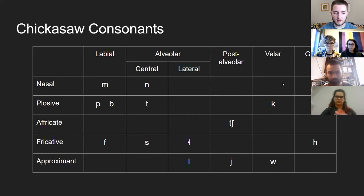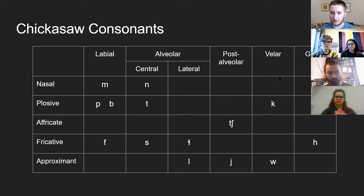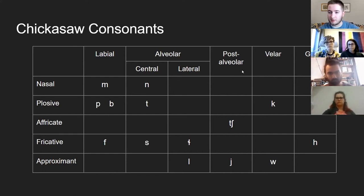Also of note is this lateral fricative 'shla,' which is quite hard for English speakers to pronounce because there's no close analog in English. Also of note is the glottal stop, which we say in English sometimes like in the word 'uh-oh,' but it is not phonemic in English. In Chickasaw, not only is the glottal stop phonemic, but it can actually occur at the end of words. Its presence or lack thereof at the end of a word can actually change its meaning, and it's really hard to pick up on sometimes.